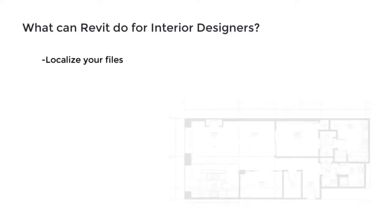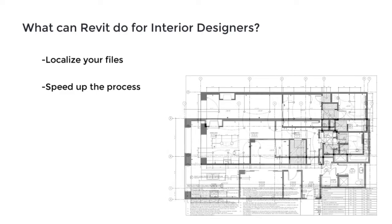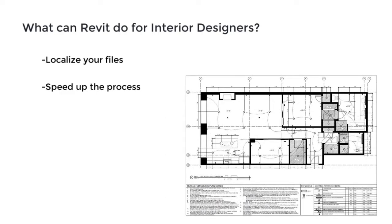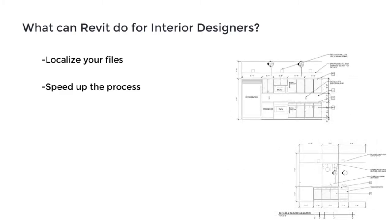The main benefit of Revit is that it localizes your files — from one model you can extract all sorts of drawings: floor plans, door schedules, renderings, and everything in between. It also speeds up design changes. By modeling your space in 3D rather than doing a series of 2D drawings, as you change aspects of your 3D model, your floor plans, sections, and interior elevations all update accordingly, reducing the redundancy of making small changes across 10 different drawings.